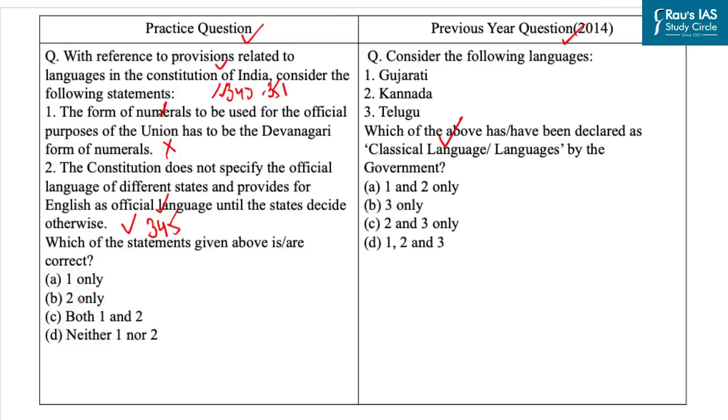So with this, our correct answer is option B, that is 2 only. The answer of this PYQ is option C, that is 2 and 3 only.